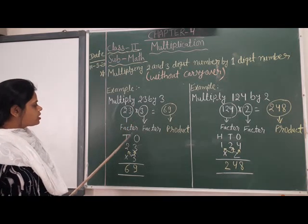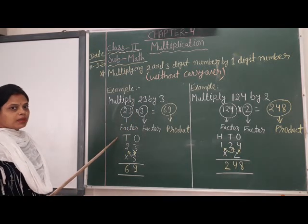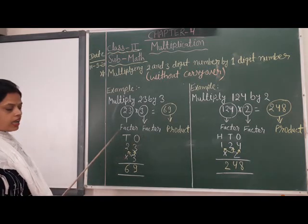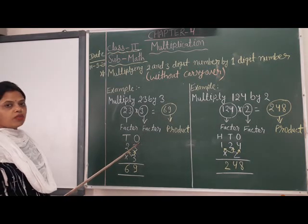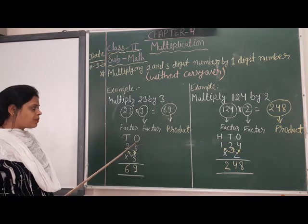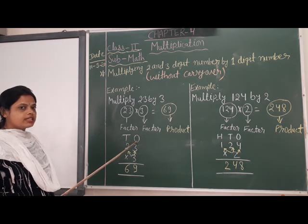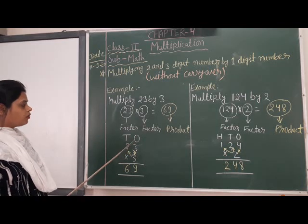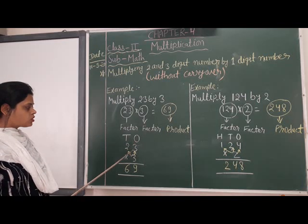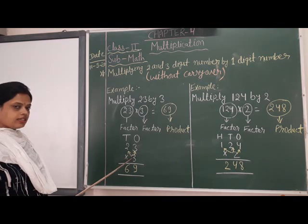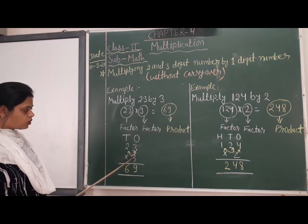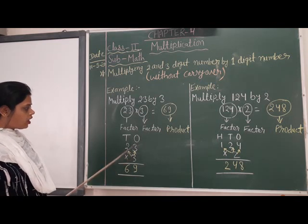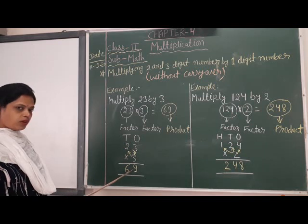Let us know how to do multiplication. First of all, arrange the numbers in the forms of 1s and 10s. First multiply the 1s column by 3 and write the answer under 1s column.